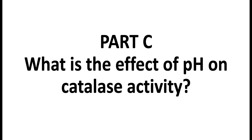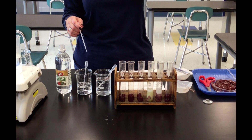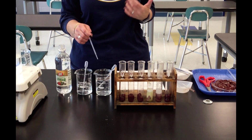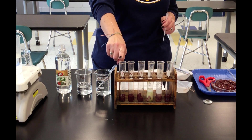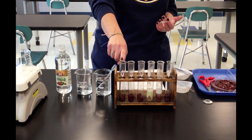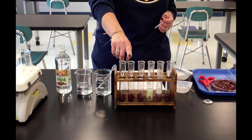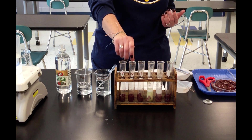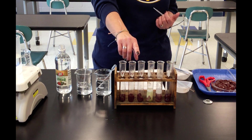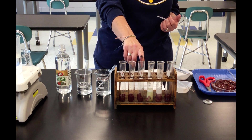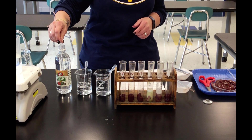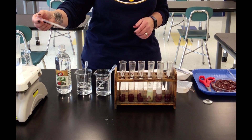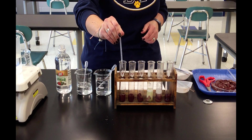We are now moving into the last part of the lab: the effect of pH on catalase activity. We have three test tubes set up, each with liver. We're going to put vinegar (acetic acid — an acid) in one, water (neutral, pH 7) in the middle one, and a baking soda solution (a base) in the third. We add one milliliter of solution to each. There is the vinegar, here is the water, and here is the baking soda solution.